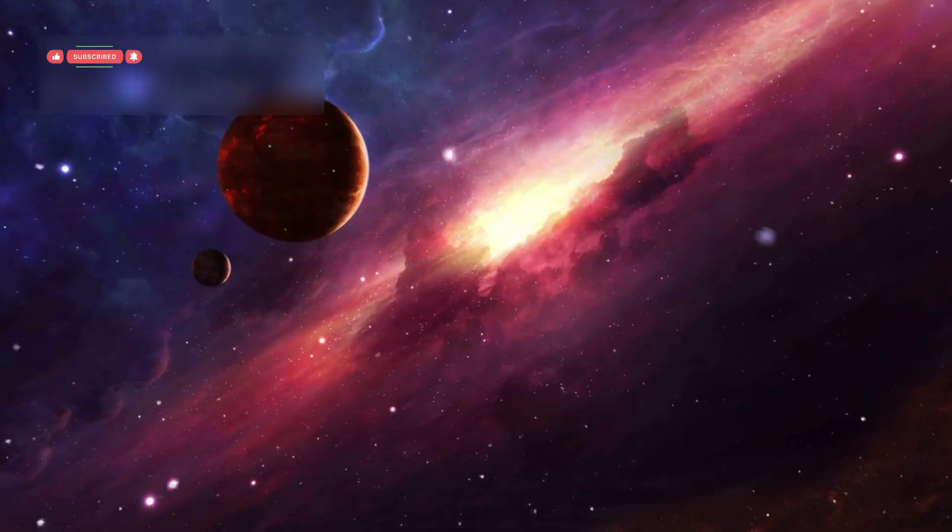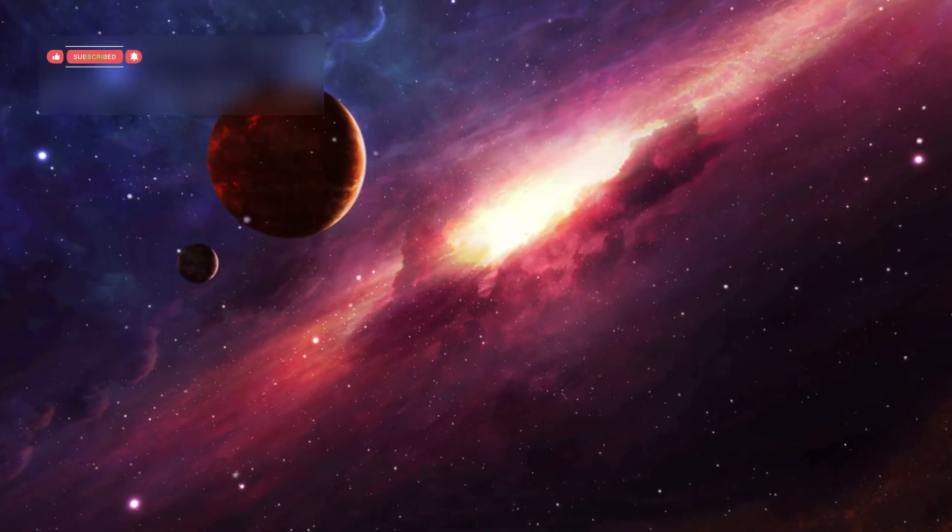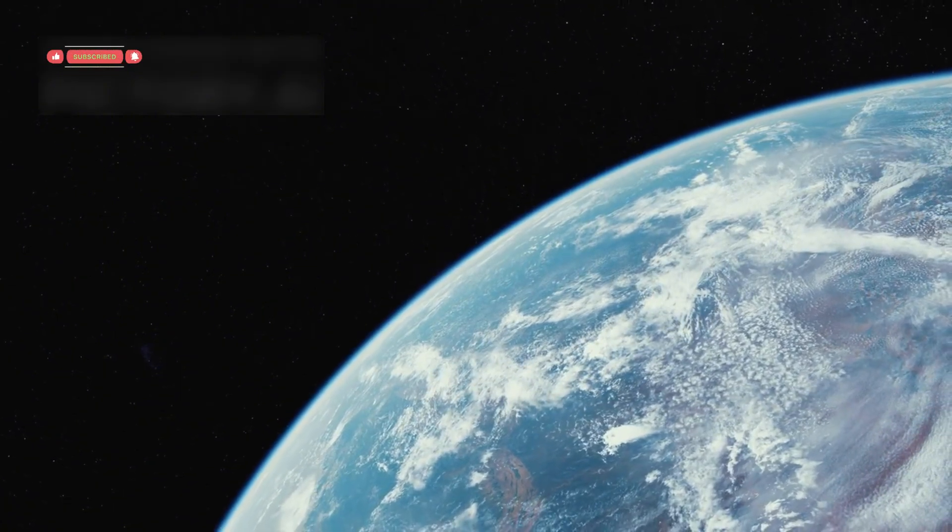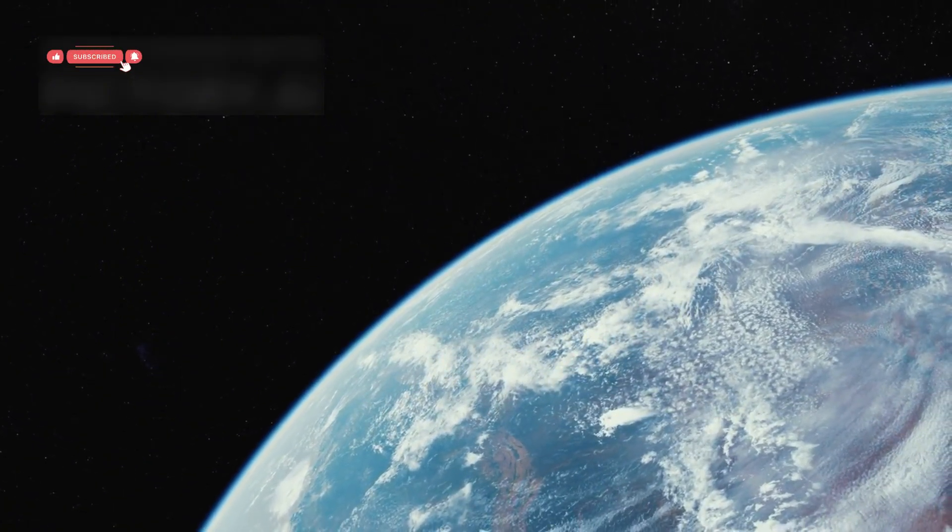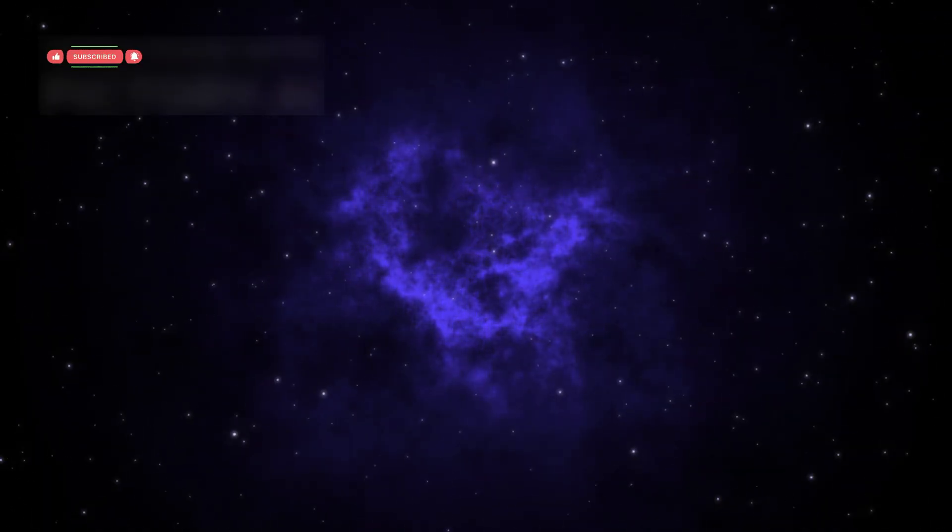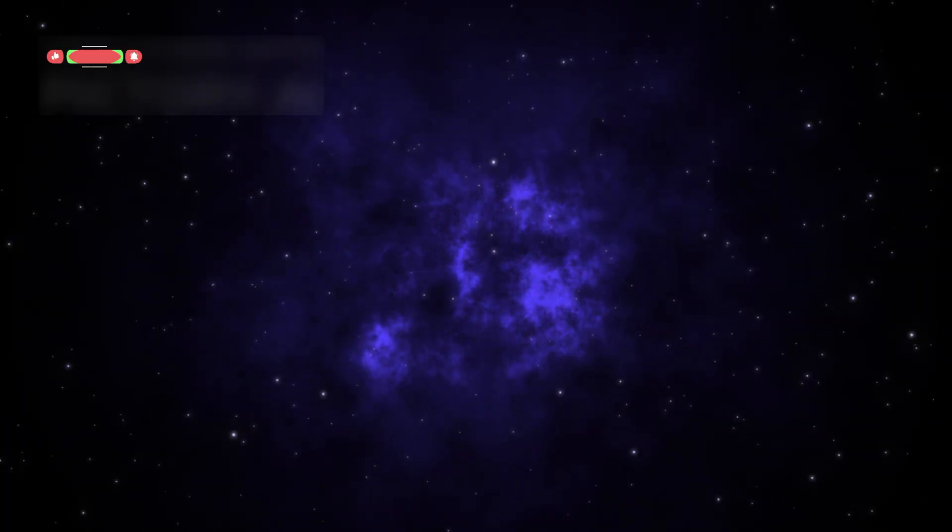In 1990, as Voyager 1 was leaving the solar system, it did something very special. NASA commanded it to turn around and take a picture of Earth from 4 billion miles away. In that image, called the pale blue dot, Earth appears as a tiny speck of light in the vastness of space.